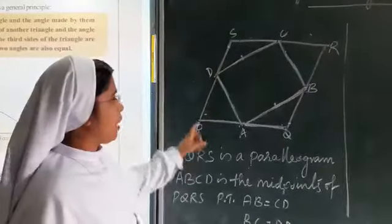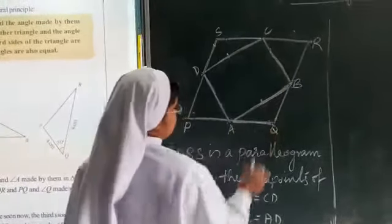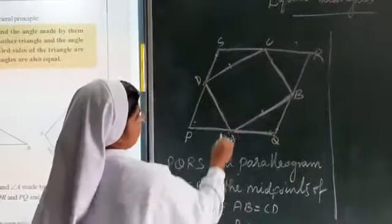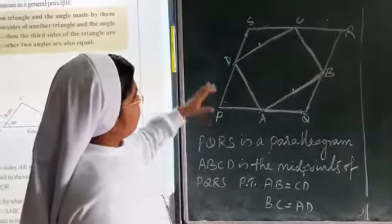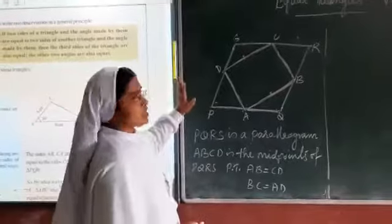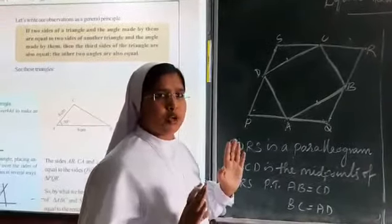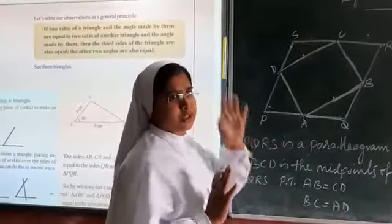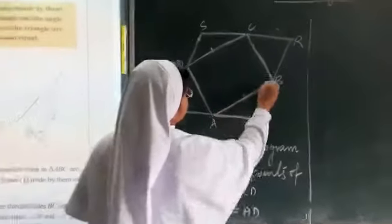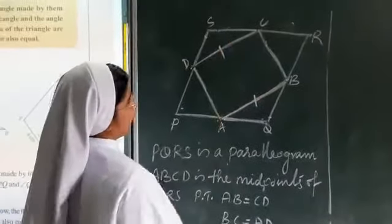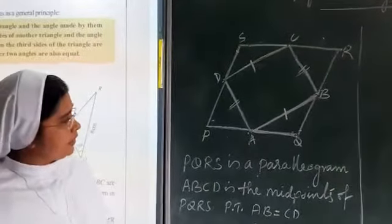A, B, C, D are the midpoints of the parallelogram PQRS. We have to prove that AB is equal to CD, and AD is equal to BC. These are the things we have to find.